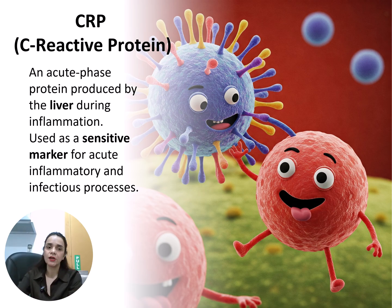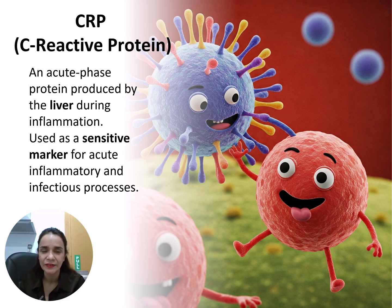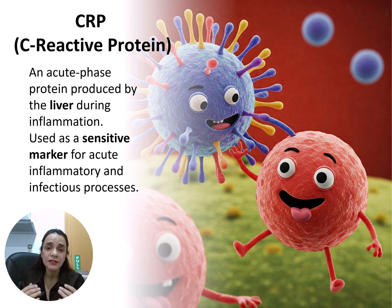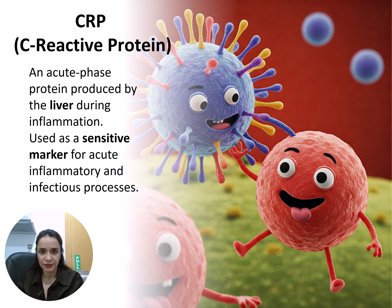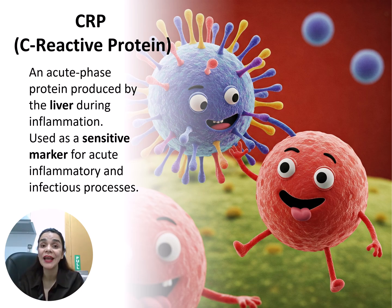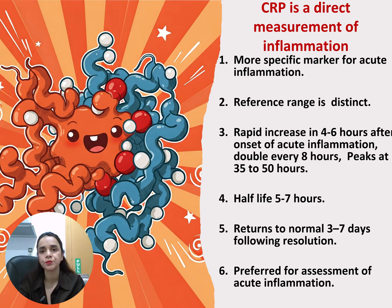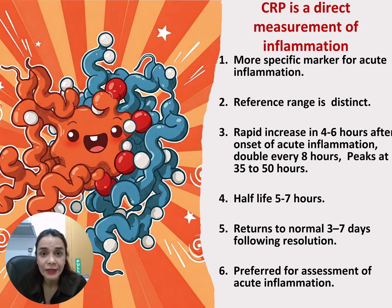The next marker is CRP, C-reactive protein. CRP is an acute phase protein produced by the liver. Acute phase proteins are proteins synthesized in the body in response to stimulation like infections, injuries, and inflammations. CRP is a direct phase reactant and a very sensitive marker for acute conditions. CRP is a direct measurement of inflammation — a more specific marker for acute inflammation.